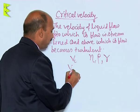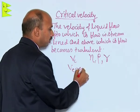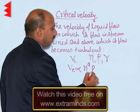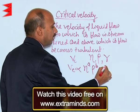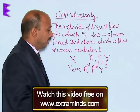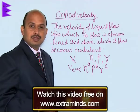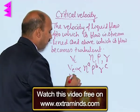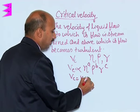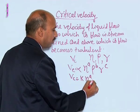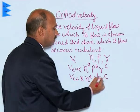Dimensionally, we can write Vc is proportional to eta raised to power a, rho raised to power b, and r raised to power c, where a, b, and c are unknown dimensions. So Vc is equal to k times eta raised to power a, rho raised to power b, r raised to power c.